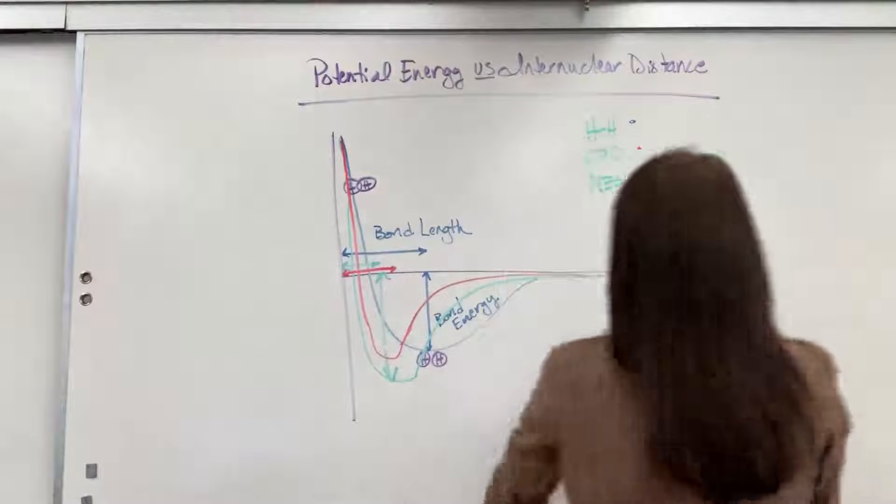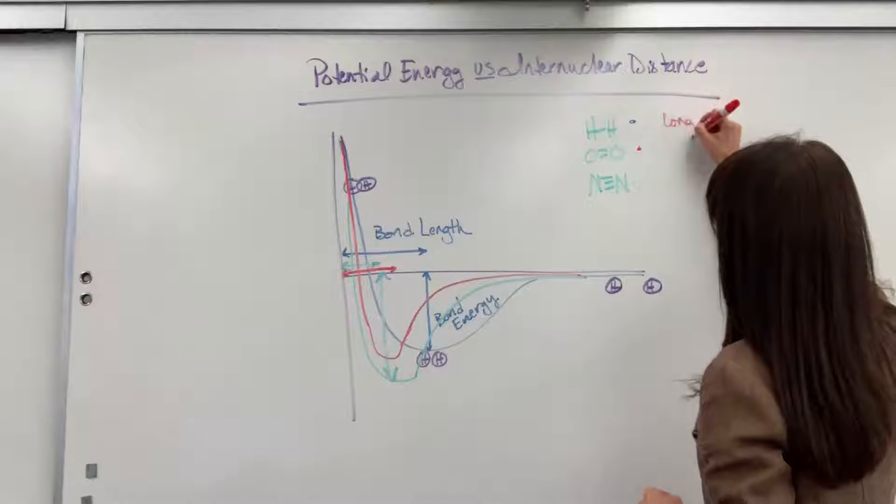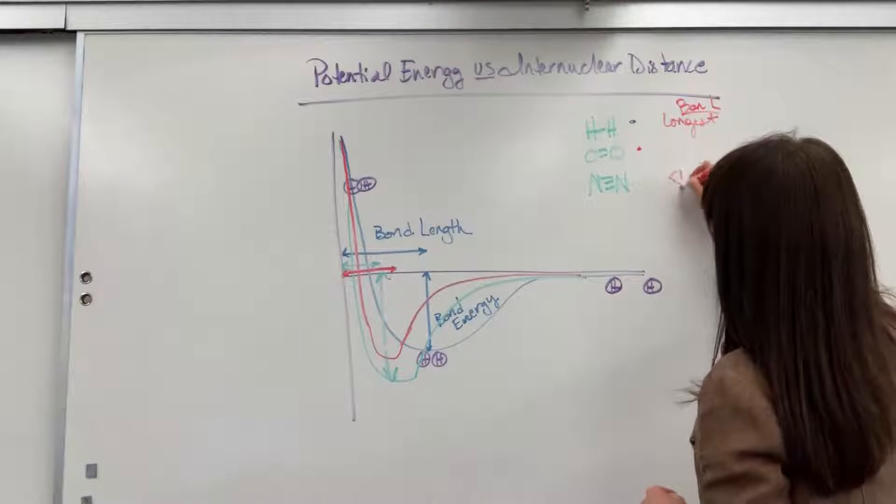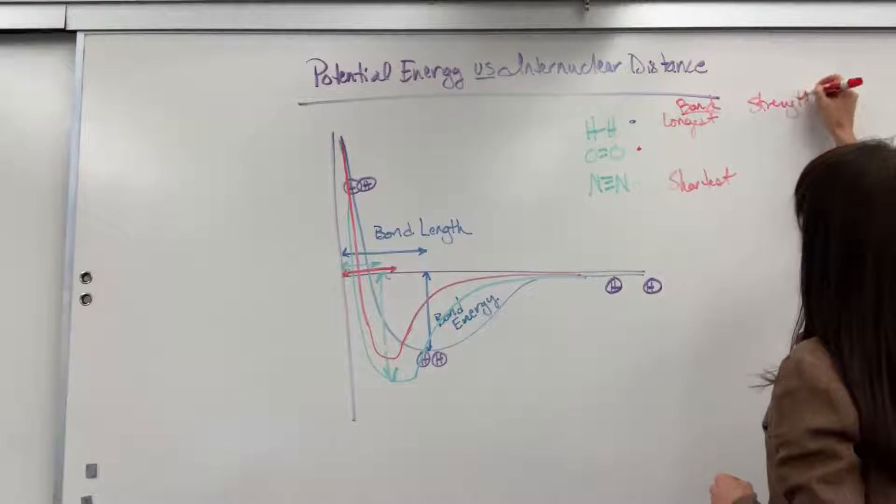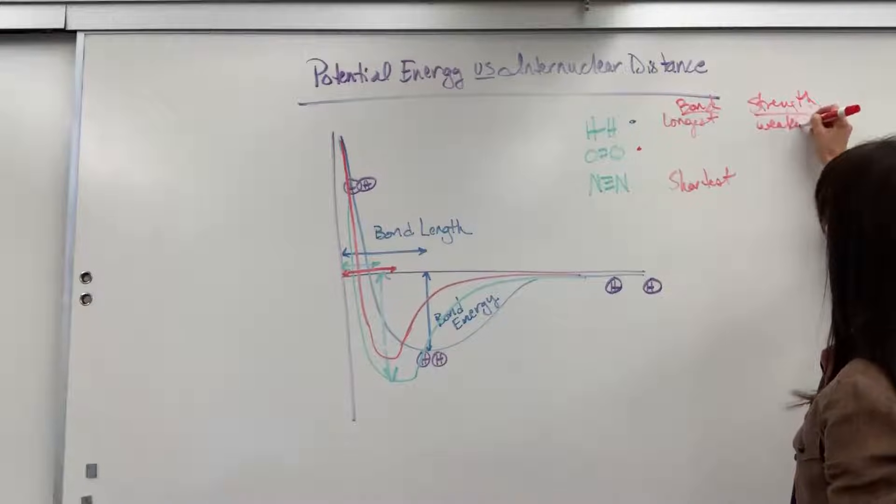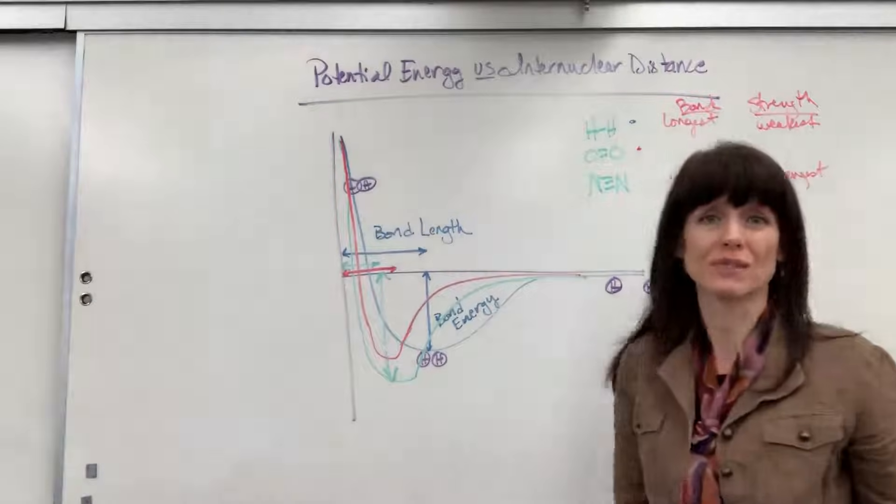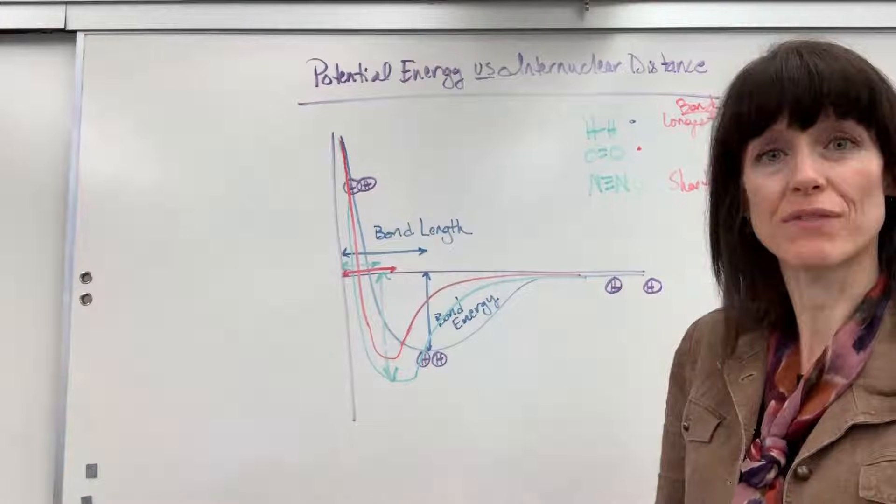So putting these all together, this, of course, is going to be our longest bond, and nitrogen is the shortest. As a result, for strength, the hydrogen is going to be our weakest, and the triple bond is the strongest. And it's the internuclear distance that shows us that. So now you can interpret that type of curve.